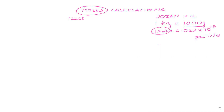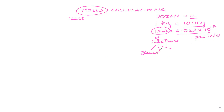When you write moles, the short form is 'mol.' Just like a dozen brings the figure 12 to mind and kg brings a thousand grams, one mole of a substance is equal to 6.023 × 10²³ particles. Substances can be elements, compounds, or mixtures — it's a very generalized term.